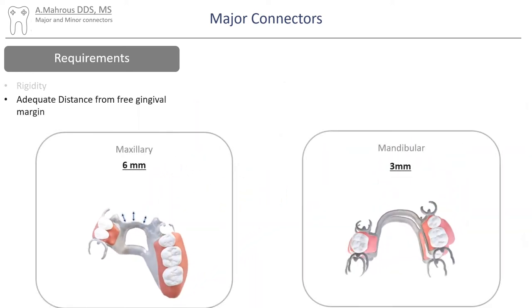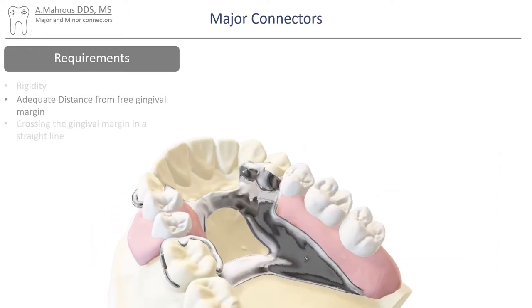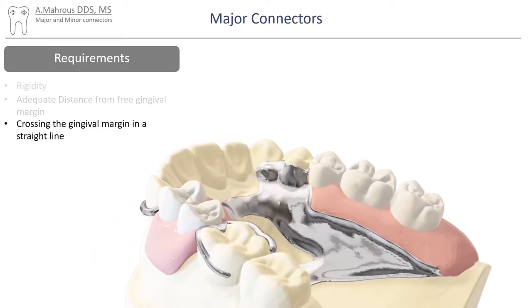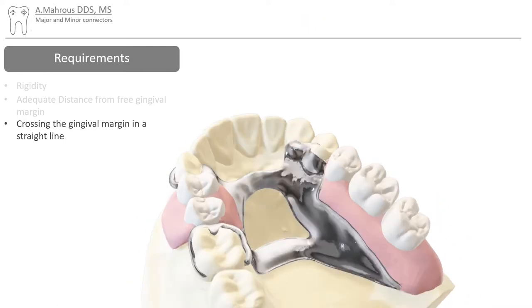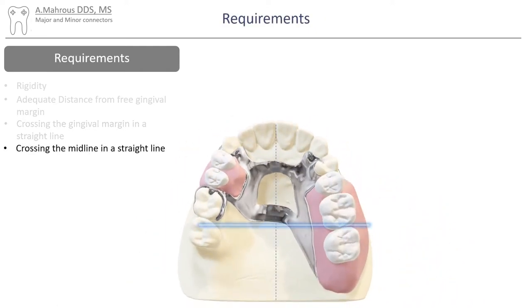The RPD also needs to maintain adequate distance for hygiene between it and the free gingival margin — 6mm on the maxillary arch and 3mm on the mandibular arch. Whenever the major connector crosses the free gingival margin, it needs to do so in a straight line, and whenever it crosses the midline, it also needs to do that in a straight line.